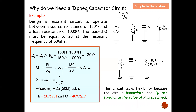Firstly, let's understand why we need a tapped capacitor circuit. In order to have a tapped capacitor circuit, we actually require one additional component — in this case, a capacitor. Having one more additional component also means the cost of the BOM increases. So let me work through this example to explain why we need a tapped capacitor circuit. This example tasks us to design a resonance circuit operating between a source resistor of 150 ohms and a load resistor of 1000 ohms.